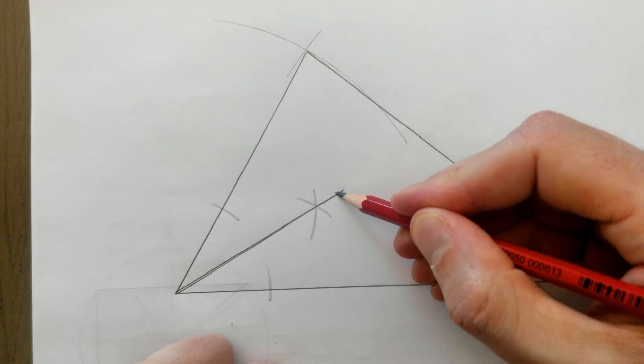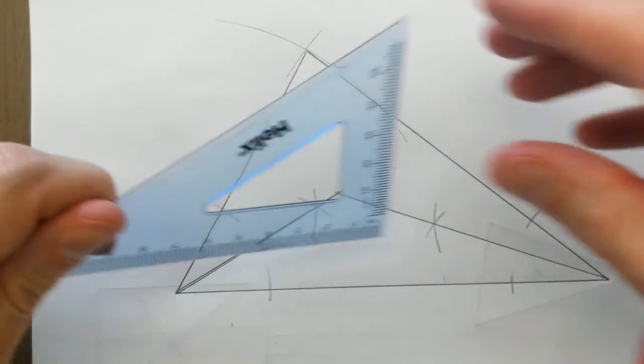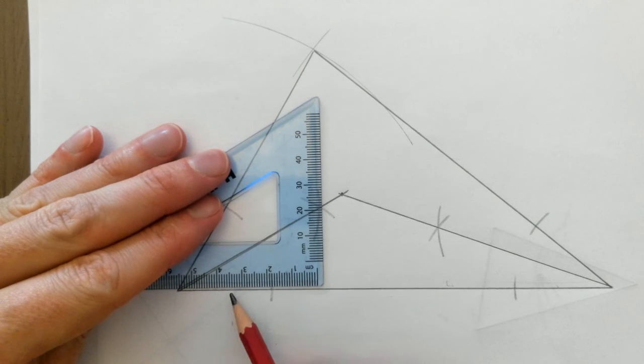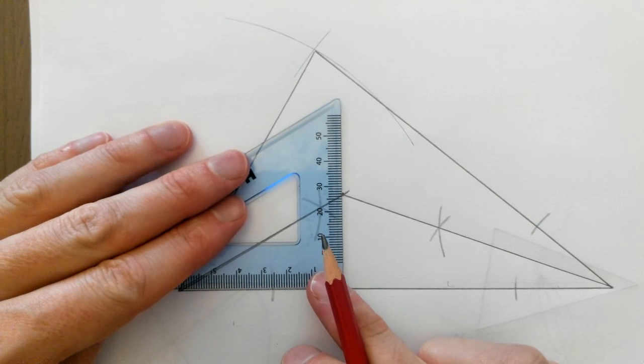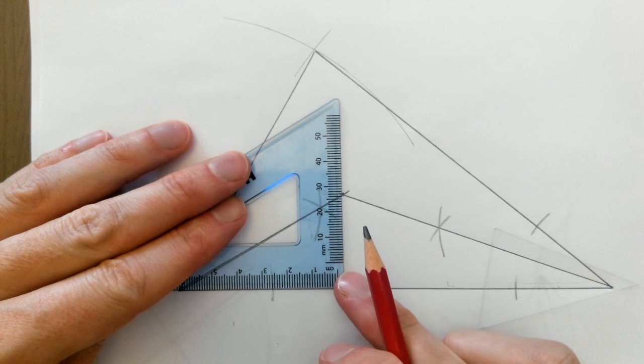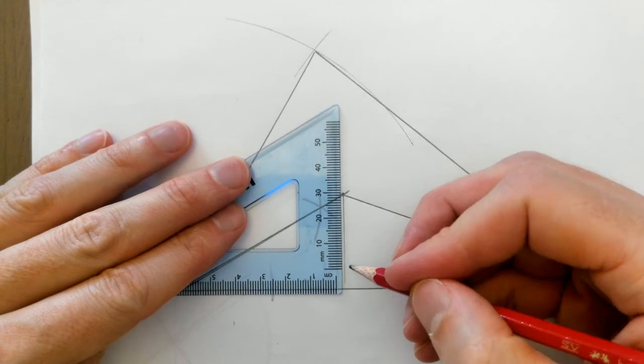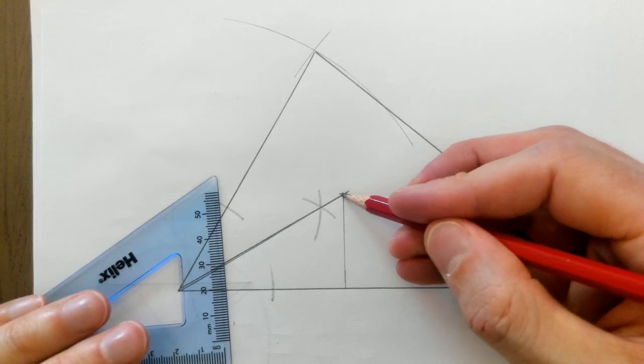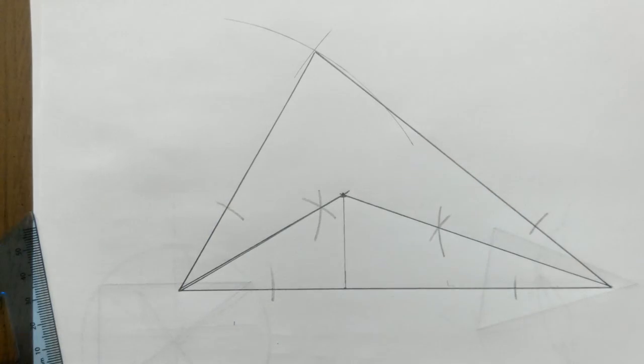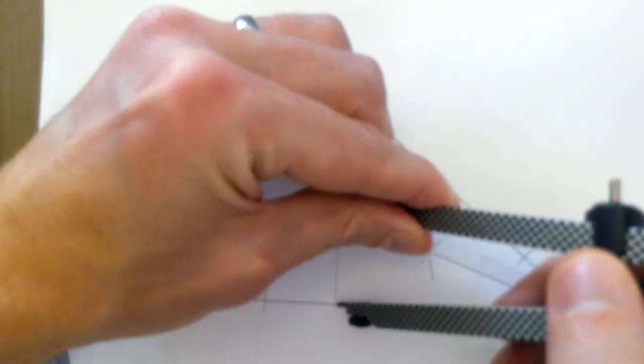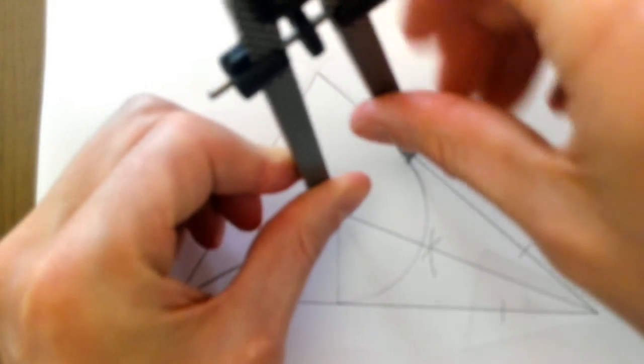Slightly off there, I'm gonna do that again because I didn't get right into the corner there, which does make a difference. Right, so for this question that's it. I'm gonna do the circle as well just to explain the answer to the question. This is the incenter. Now to draw the circle, as I said in the video, you line up the base of the triangle with the crossover point.